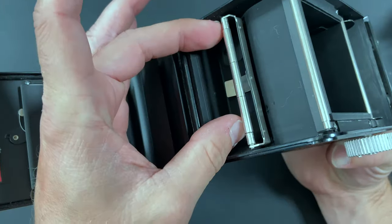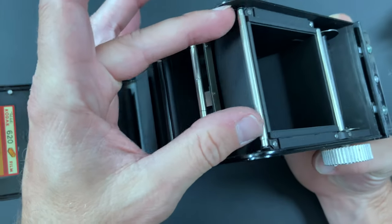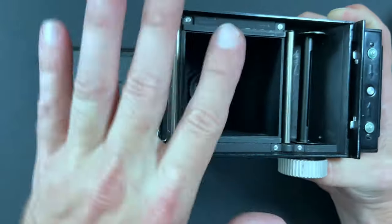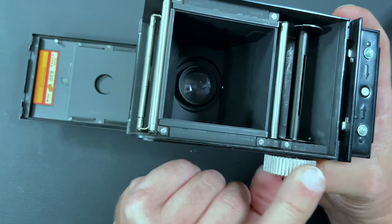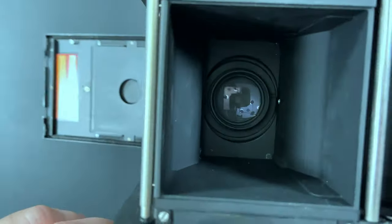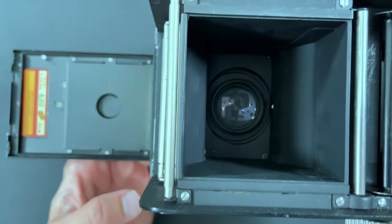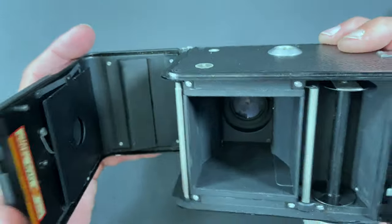So you can see here it says use Kodak 620 film. The film you would drop this roll of film here, it would come across and you would take it to the take-up spool here on this side. And you can see there's the lens down inside there where it would take your pictures.